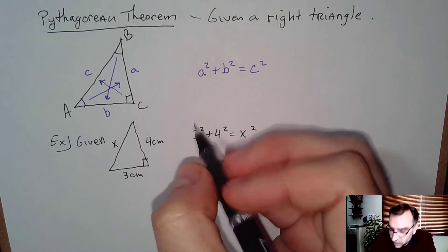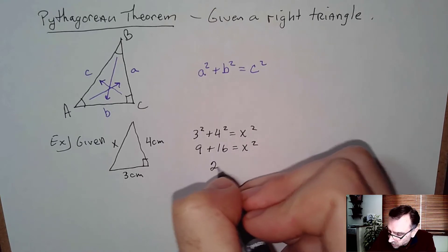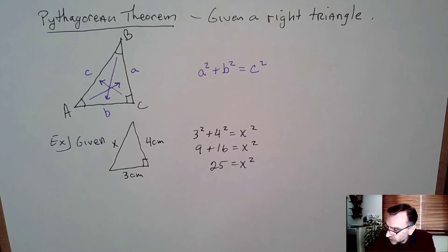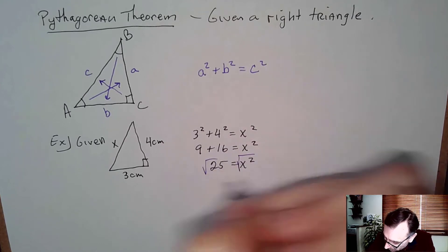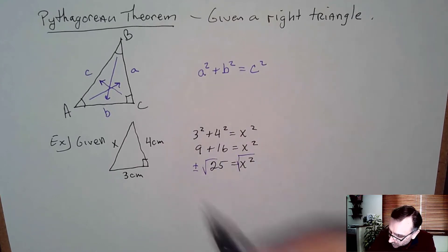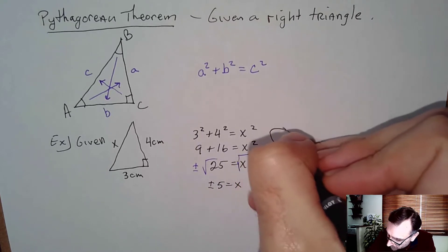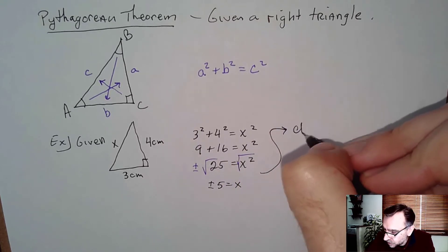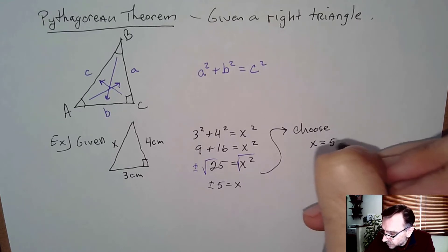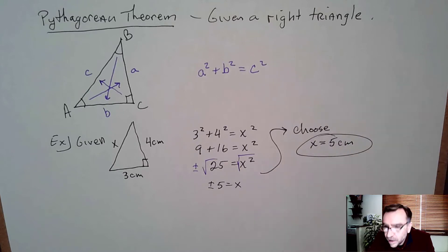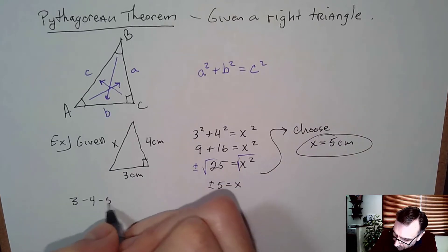In this case we have 9 plus 16 equals x squared, or 25 equals x squared. To get out from under x squared, take the square root of both sides — don't forget the plus or minus. We get plus or minus 5 equals x. Since this is geometry we choose x to be positive, so 5 centimeters. This is your famous 3-4-5 right triangle.